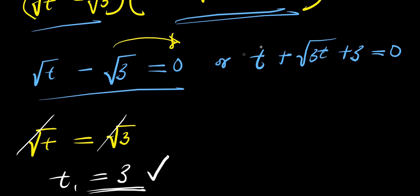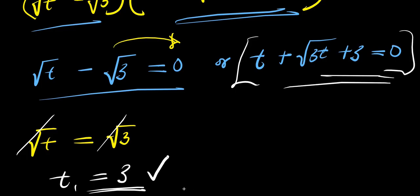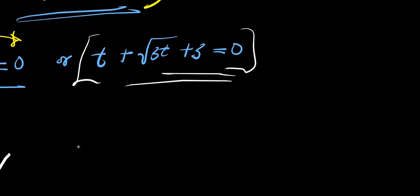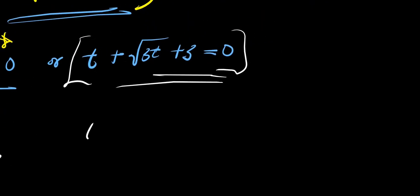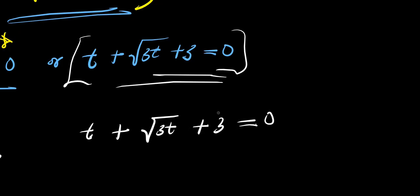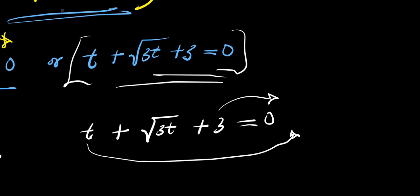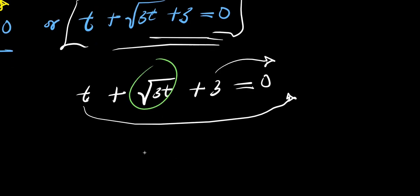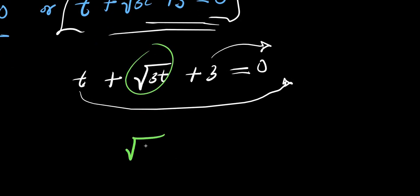This is our t₁. To solve for other values of t, we use the second factor: t plus root three t plus three equals zero. Taking the three and the t to the other side, we have square root of three t equals negative three minus t.